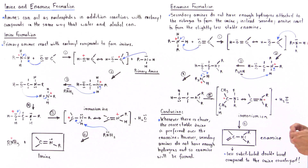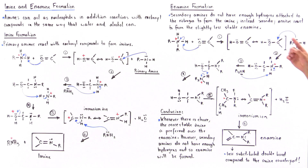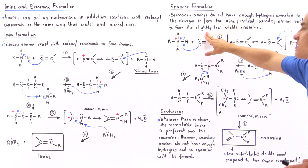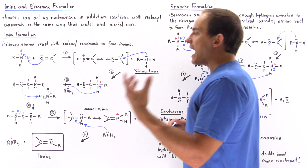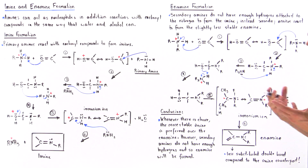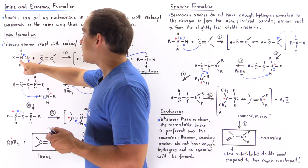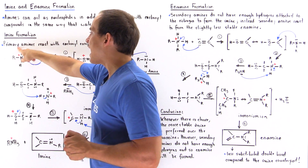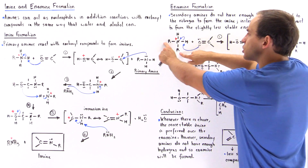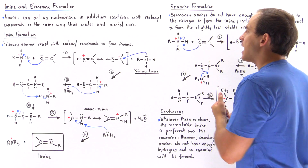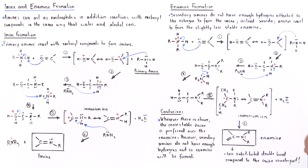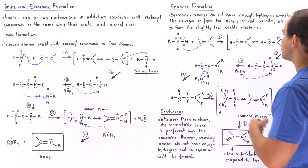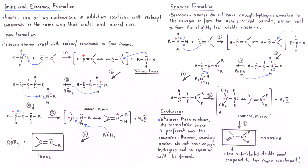Now let's move on to enamine formation. Secondary amines do not have enough hydrogens attached to nitrogen to form an imine. Instead, secondary amines react to form a slightly less stable molecule called an enamine. The first step is exactly the same, except now instead of an acid with three H atoms on nitrogen, two of those positions are R groups and only one position is an H atom. This still acts as the acid, protonating the oxygen end of the carbonyl to form a resonance-stabilized intermediate with a positive charge on oxygen and carbon.